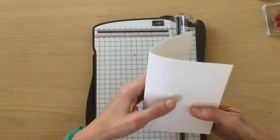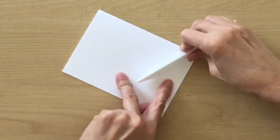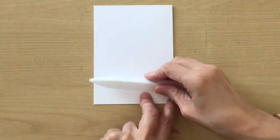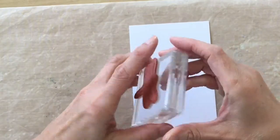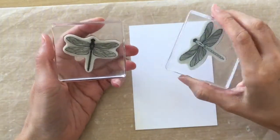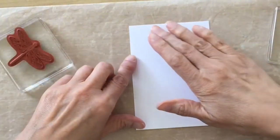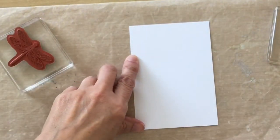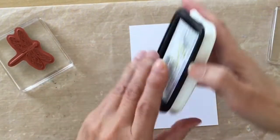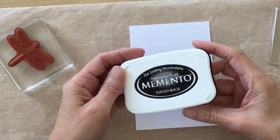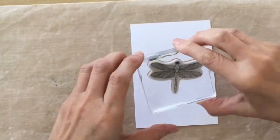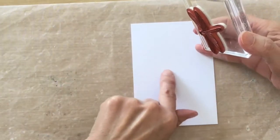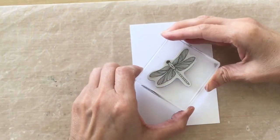This is our card base. I'm just going to burnish this with my bone folder and put that to one side. I'm going to do some stamping now. I'm going to use both of the dragonflies and I have my piece of Basic White that we cut out earlier. I have the Memento Tuxedo Black ink, so I'm going to ink up my dragonflies and I want to put my dragonflies sort of in the center of my card.